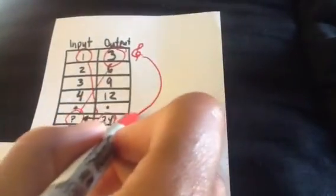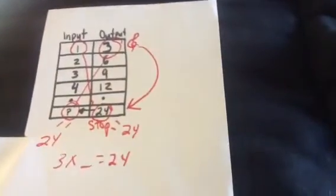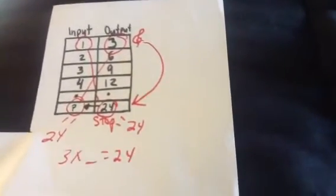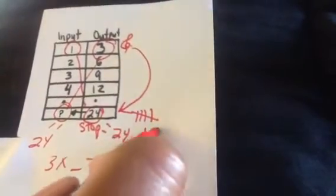So we're going to actually sing the 3 song. And we're going to stop all the way down when we get to 24. All right. So let's sing. 3, 6, 9, 12, 15, 18, 21, 24.